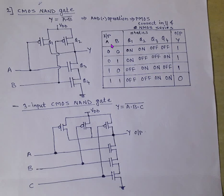Now we will see the truth table for the CMOS NAND gate. With two inputs A and B, there are four possibilities: 00, 01, 10, 11. If A is 0 and B is 0: Q1 is on, Q2 is on, Q3 is off, Q4 is off. Since Q1 and Q2 are on, they act as short circuits, so VDD appears at the output. The output voltage Y is approximately equal to VDD — logic 1.